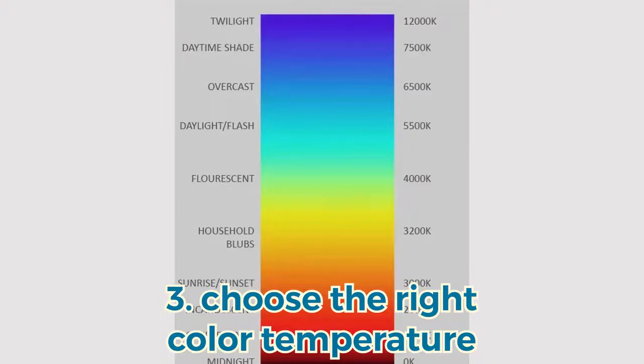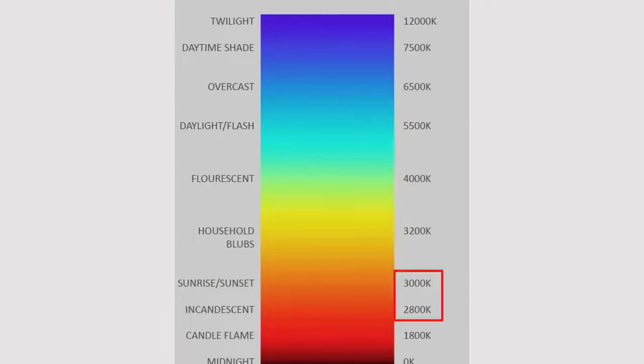How to choose the color temperature? 4,000 to 5,000 kilowatts is recommended for the living room. 2,700 to 3,000 kilowatts is recommended for the bedroom and is more conducive to sleep. And 3,000 to 4,000 kilowatts is recommended for the dining room.